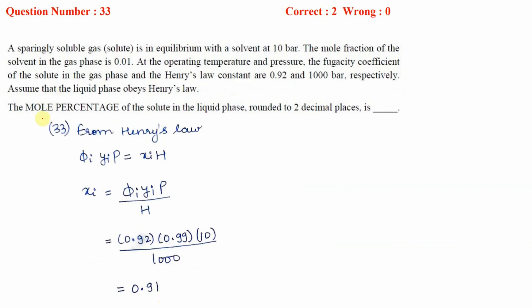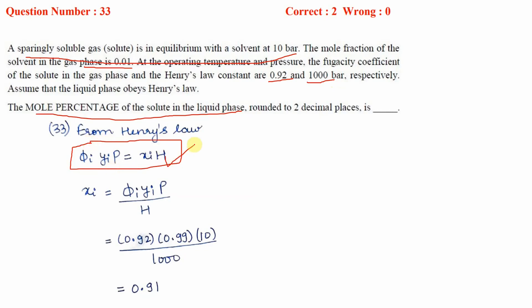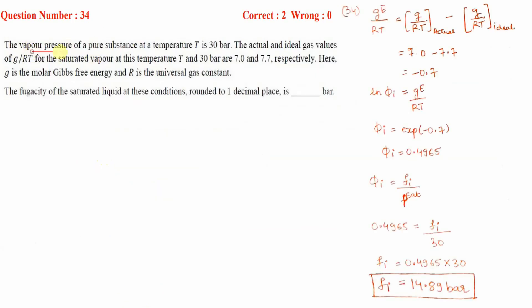A gas is in equilibrium with a solvent at 10 bar. The mole fraction of solvent in the gas phase, fugacity coefficient, and Henry's law constant are given. Assuming Henry's law applies, we use the Henry's law relation to find the liquid-phase mole fraction. Substituting the known values — Henry's constant, fugacity coefficient, gas-phase composition, and pressure — gives the mole percentage of solute as 0.91%.